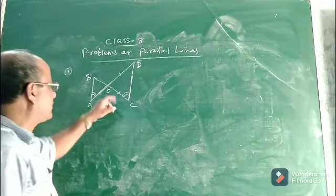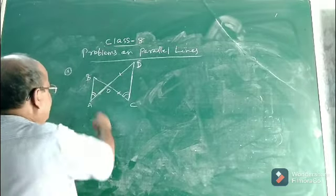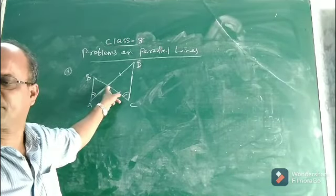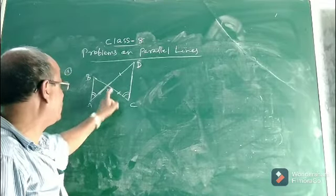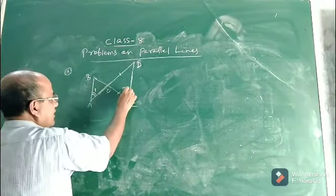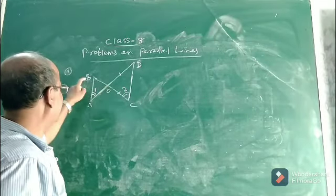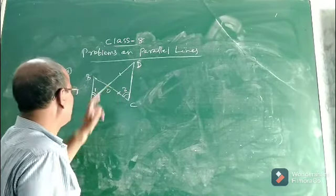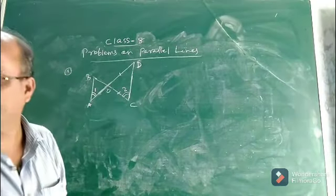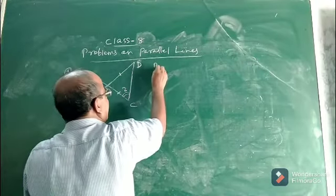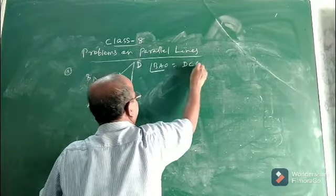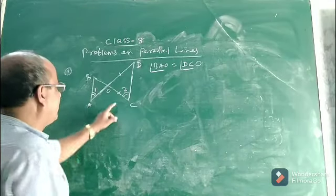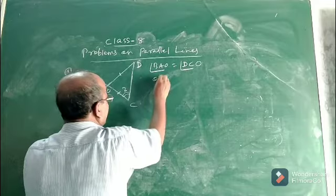Look at the question. In this figure you see lines AB and CD, and AD and BC intersect each other at point O. This is angle one and this is angle two. Angle BAO equals angle DCO — that means angle one equals angle two. You are also given OD equal to OC.